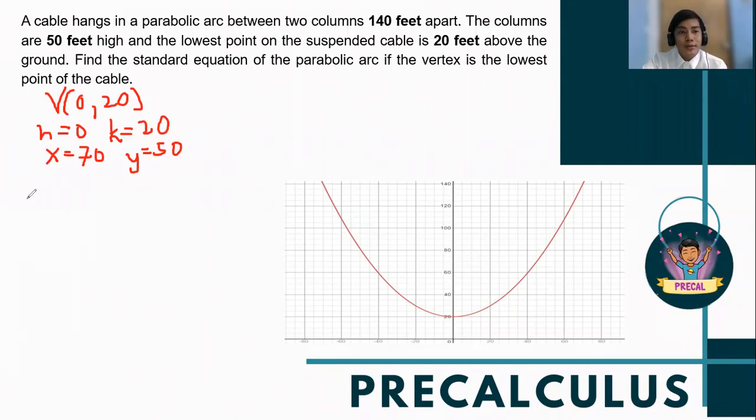Now, we write the standard equation as (x - h)² = a(y - k). Note that 4c is equal to a. So no need to multiply it by 4. We'll just consider a as the latus rectum itself.